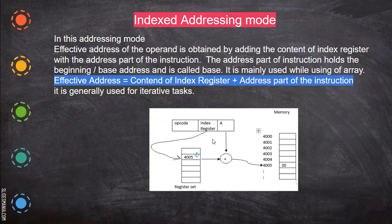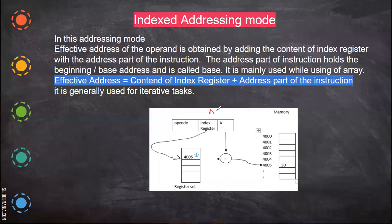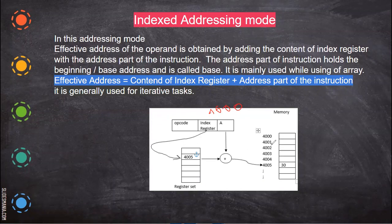This will be added with address part. Say for example if it is 4005 and you are referring the location. If it is 400, let us imagine we have the starting is 400. I want to address this location, then address part will consist of 1. Now 400, this will be added, this register and this will be added. So 4001.